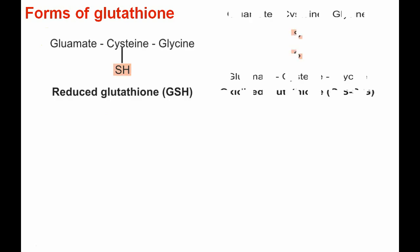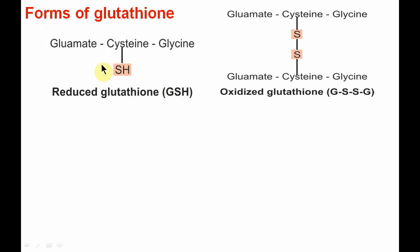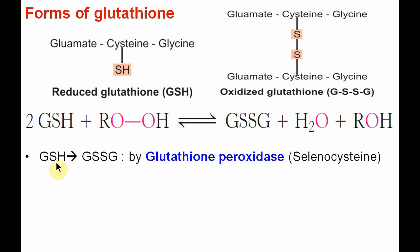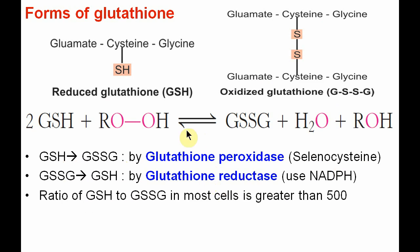Next we will see some of the forms of glutathione. The first form, when glutathione is synthesized, is called the reduced glutathione form, that is GSH — here you can see the sulfhydryl group. Another form is the oxidized glutathione form, where two glutathione molecules are linked with a disulfide bond. The reduced and oxidized forms are interconvertible. The forward reaction, from reduced to oxidized form, is catalyzed by the enzyme glutathione peroxidase, which contains selenium in the form of selenocysteine in its active site. The reverse reaction, from oxidized to reduced form, is catalyzed by glutathione reductase, which utilizes NADPH. The ratio of reduced to oxidized form in most cells is greater than 500, which is compromised when there is oxidative stress.